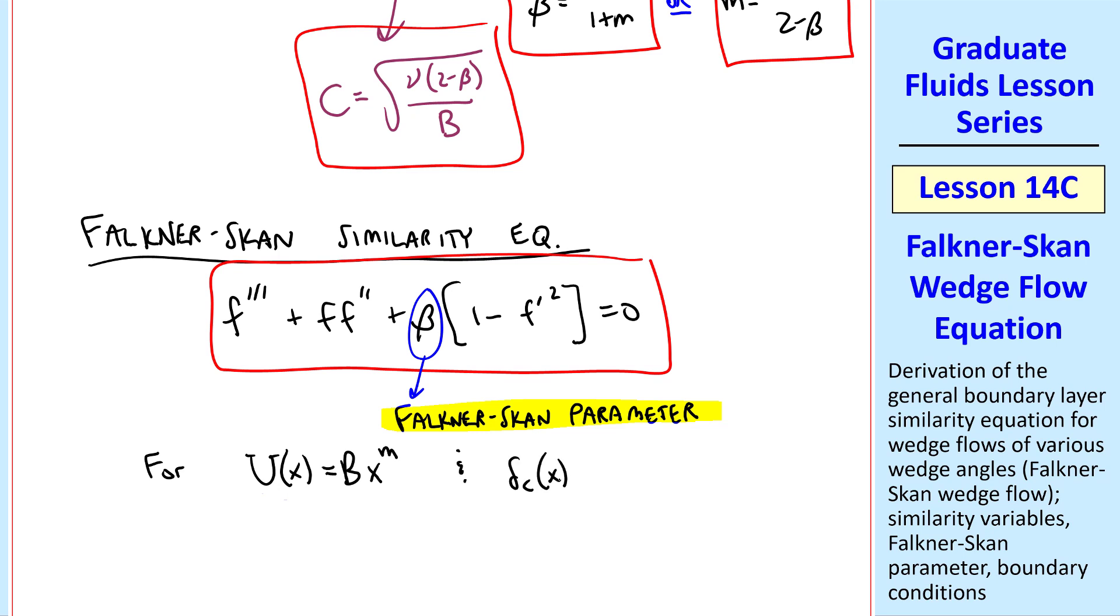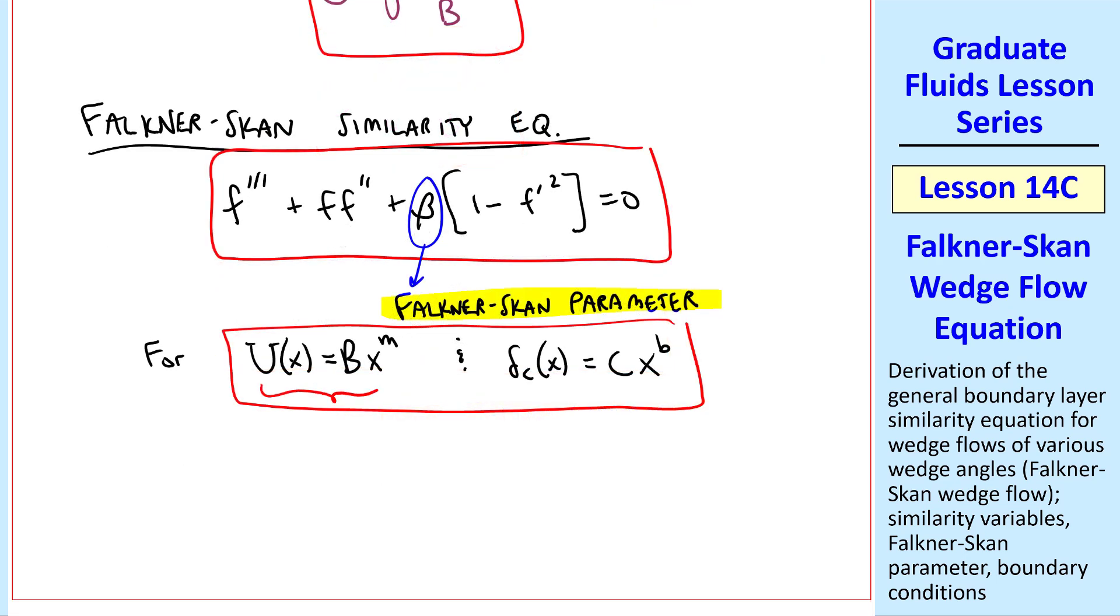And this is valid for flows with outer flow U equal Bx to the m and characteristic delta equal cx to the b. And this turns out to be the case for 2D wedge flows, as I sketched previously, where the boundary layer is growing along this wall and angle gamma determines this exponent m.